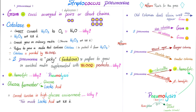Strep pneumo is gram-positive, but this is true if the sample is fresh. Old colonies do not stain very well — they may appear gram-negative, appearing pinkish because they lost their purple color. So you need to get a fresh sample. In a nutshell: Streptococcus pneumoniae new colonies are usually gram-positive (purple), but old colonies will give you a pink color.